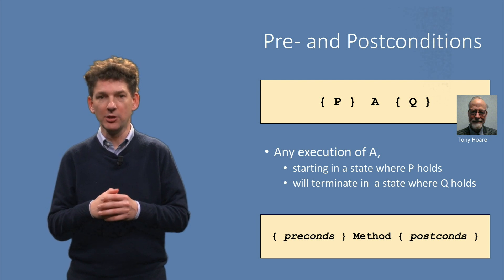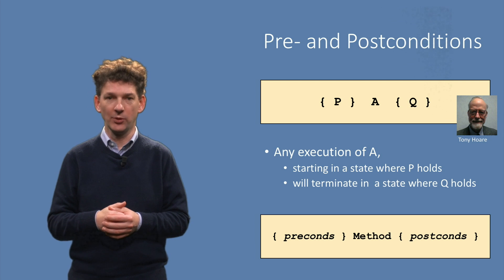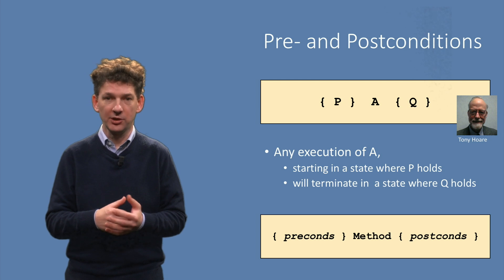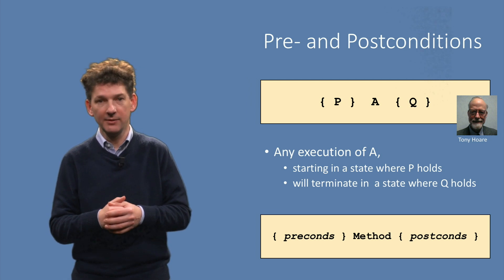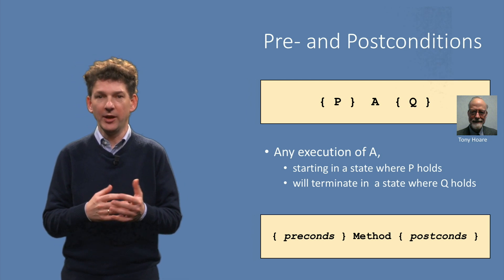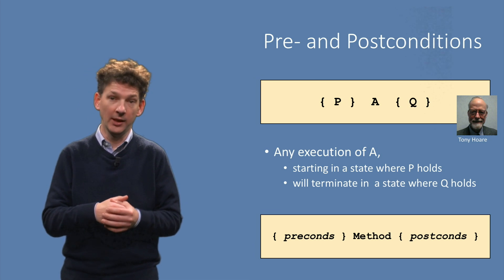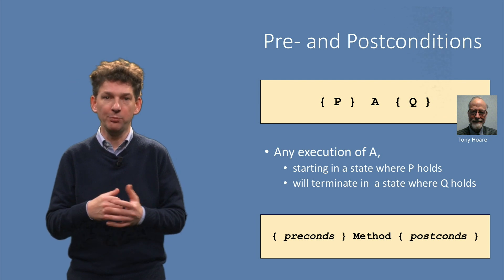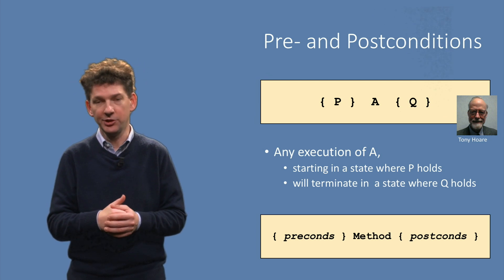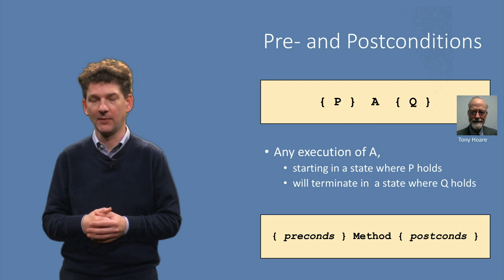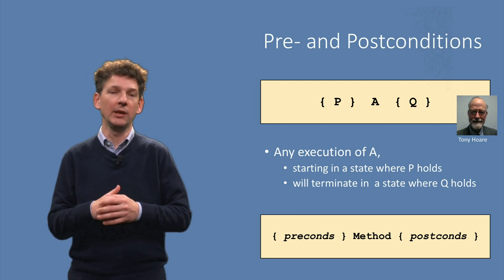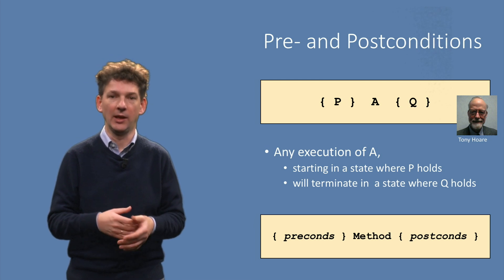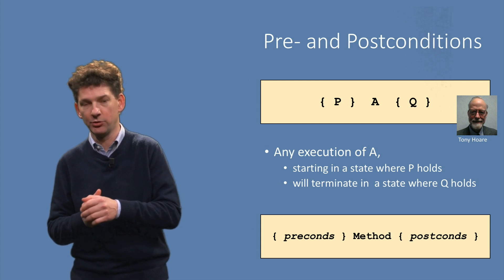Hoare triples can be used to reason about individual statements as well as full programs. For example, if your program first executes a statement A and then a statement B, you can sequence them by doing first A and then B. The result — the post-condition of A — should then imply the pre-condition of B. In our context the program A will be a Java method, thus we will reason about methods in terms of their pre- and post-conditions.